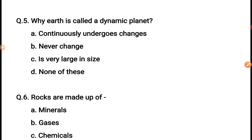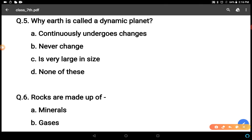Next question: why earth is called a dynamic planet? Options: continuously undergoes changes, never change, is very large in size, none of these. Earth is not so big in size. The correct answer is continuously undergoes changes, because changes are observed in earth, time to time, under the earth and on the earth.